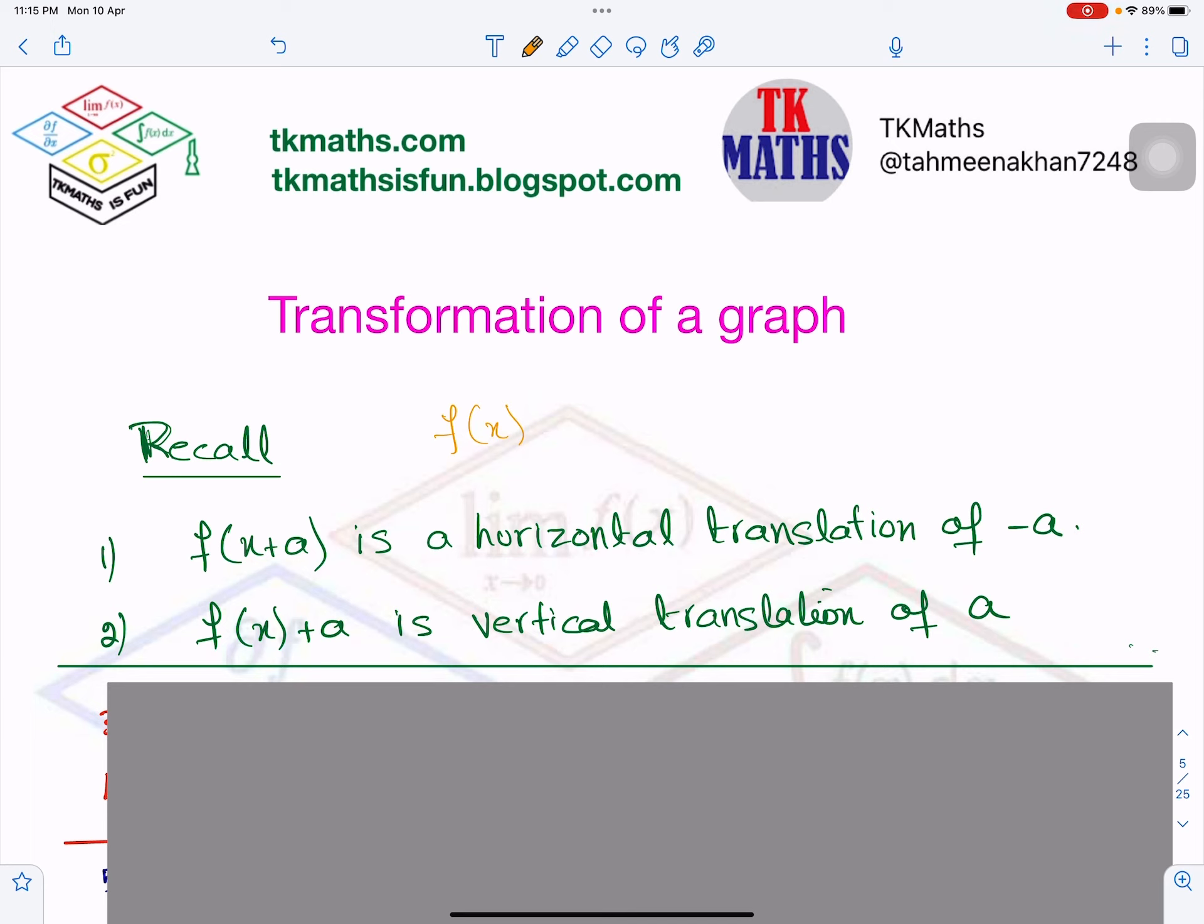So if it is x plus a, you know what does it mean? The main graph, which is f(x), will move or shift to the left horizontally by constant a. So if a is 2, it means the main function or main graph f(x) will move to the left. If it is minus a here, for example, like this, then it will move to the right.